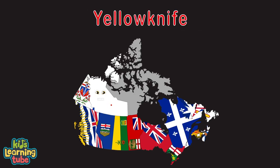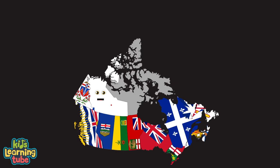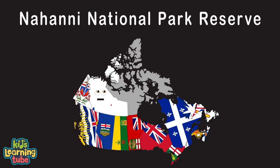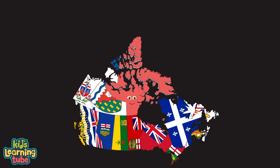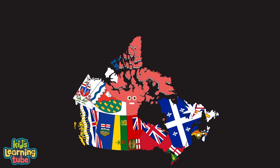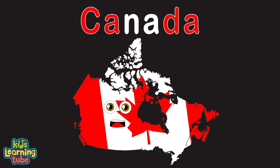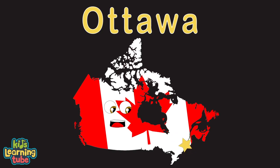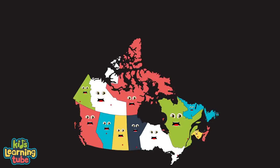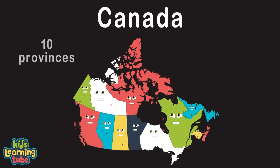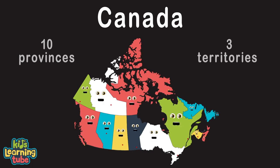I'm the Northwest Territory — my capital's Yellowknife, one of the three territories in Canada. One of my coolest attractions is Virginia Falls in Nahanni National Park Reserve. I'm the Nunavut Territory — capital's Iqaluit. I am known for my indigenous people, the Inuit. I form most of the Canadian Arctic Archipelago and am the least populated Canadian territory. My name's Canada — in the northern part of North America, my capital is Ottawa.